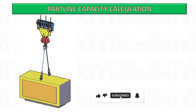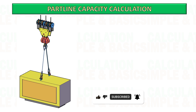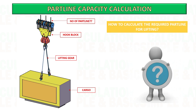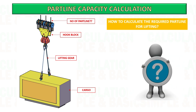Hello. In today's video, we will be discussing the methodology for determining the necessary quantity of part lines required for a lifting operation. For lifting operations, it is important to have an appropriate number of lines on the hook block to ensure sufficient capacity for hoisting the cargo.